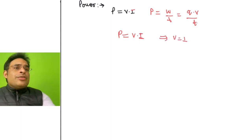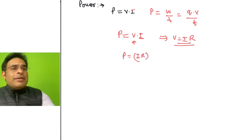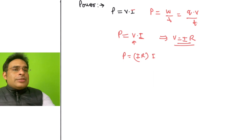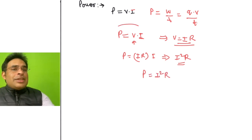We know from Ohm's law that V = I × R. In the formula P = V × I, if I replace V with I × R, I get P = I × R × I, which equals I² × R. So we get another formula for power: P = I² × R.